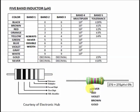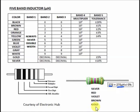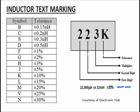For example, silver is the military marking (always silver for the first band). The second color is red = 2, third is violet = 7, giving 27. Brown as the fourth is the multiplier: 10 to the 1 = 10, so 27 × 10 = 270 microhenry. The fifth color gold is the tolerance, equivalent to plus or minus 5%. So the full specification is 270 microhenry plus or minus 5%.